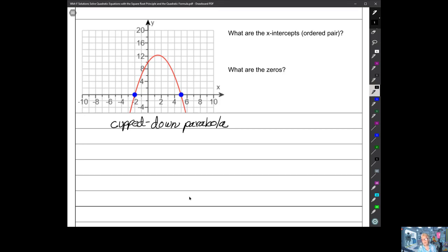Alright, again, we're being asked, what are the x-intercepts as ordered pairs? Well, the x-intercepts are negative 2, 0 and 5, 0. What are the zeros? Negative 2 and 5. It's a new concept you have to get used to, but it's not really that hard.